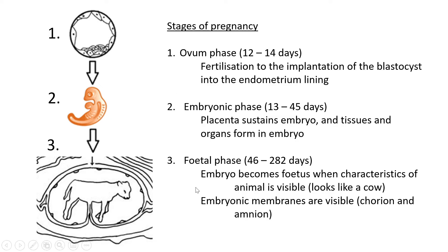The third and last is the fetal phase, from around day 46 to day 282 — the entire pregnancy for a cow is generally about 282 days. In this phase the embryo becomes the fetus, when the animal's characteristics start to be visible: the head, tail, feet, and legs — everything that tells you the species. You can also see the embryonic membranes — the chorion, the amnion with amniotic fluid — with the fetus on the inside.